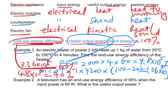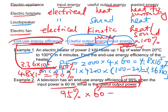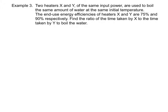End-use energy efficiency can also be written as useful output power over input power. For Example 2, the useful output power is equal to the end-use energy efficiency, which is 95%, times the input power, which is equal to 60 watts. Therefore, the useful output power is equal to 57 watts.